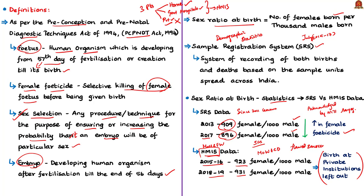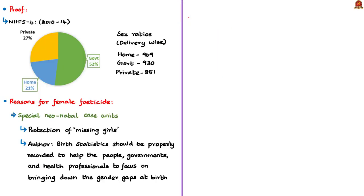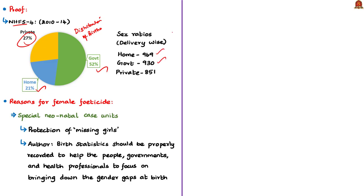To prove this, the author quotes the distribution of births from National Family Health Survey 4 (NFHS-4) for the period 2010 to 2014. Distribution of births at home was 21%, at government hospitals 52%, and at private hospitals 27%. This means at least 27% of data is not represented in HMIS. According to the same NFHS-4 survey, the sex ratio at birth was 969 females per 1000 males in home deliveries, 930 in government hospitals, and 851 in private hospitals.